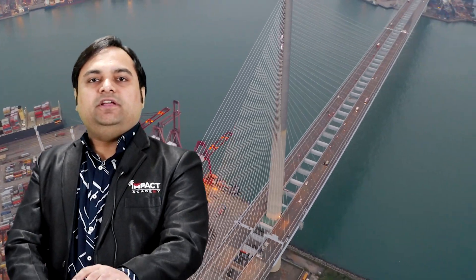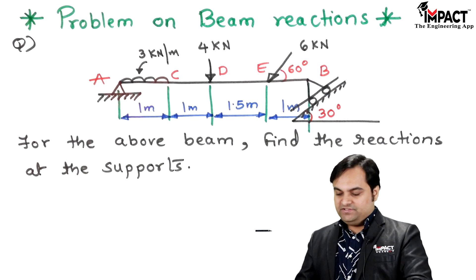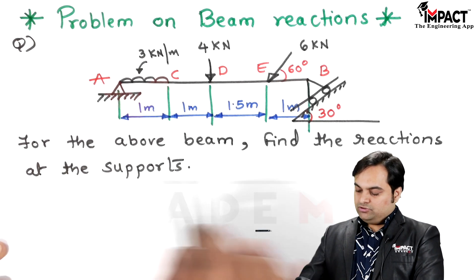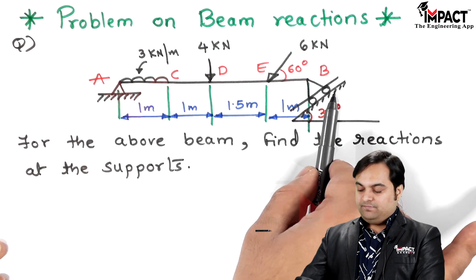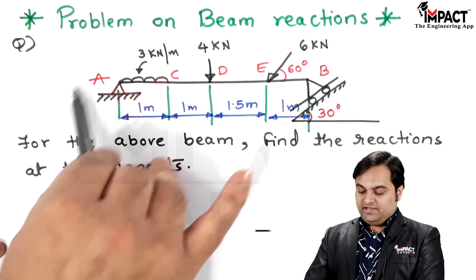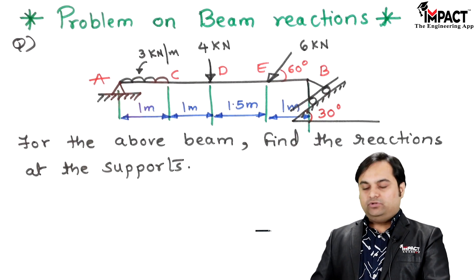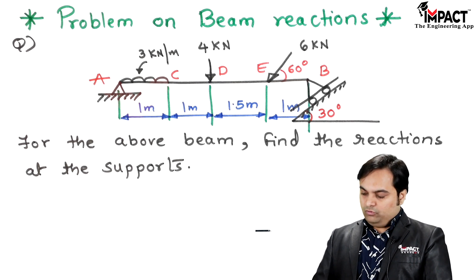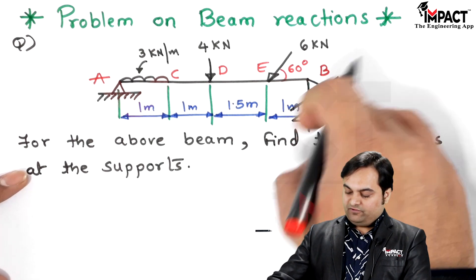Here in this video I will be explaining a problem on beam reactions. The question asks us to find the reactions at the supports. This beam is supported at A and B — at A it is a hinged support, whereas at B it is a roller support inclined at an angle of 30 degrees.